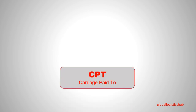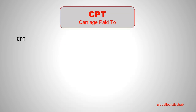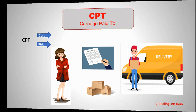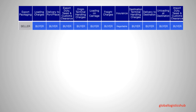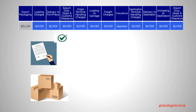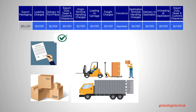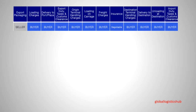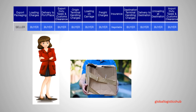Moving on to Incoterm number three: CPT, also known as Carriage Paid To. In CPT, the seller is responsible for clearing the goods for export and delivering goods to the named place of destination. Risk is transferred from the seller to the buyer as soon as the goods are delivered to the first carrier, even if there are multiple transportations. The seller is not responsible for damages if the buyer has not insured the products, as the goods have already been delivered and transferred to the first carrier.